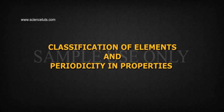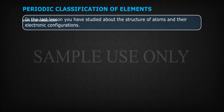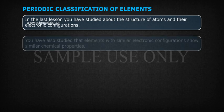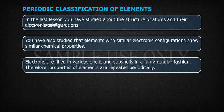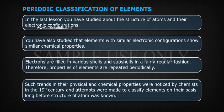Classification of Elements and Periodicity in Properties. In the last lesson, you have studied about the structure of atoms and their electronic configurations. You have also studied that elements with similar electronic configurations show similar chemical properties. Electrons are filled in various shells and sub-shells in a fairly regular fashion, and therefore properties of elements are repeated periodically. Such trends in their physical and chemical properties were noticed by chemists in the 19th century, and attempts were made to classify elements on their basis long before the structure of atom was known.